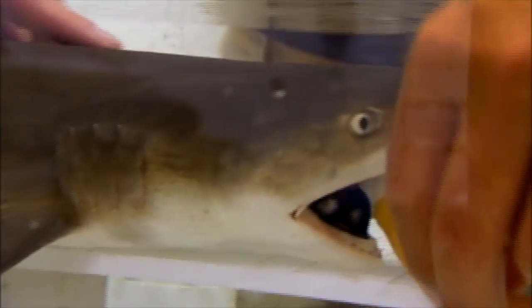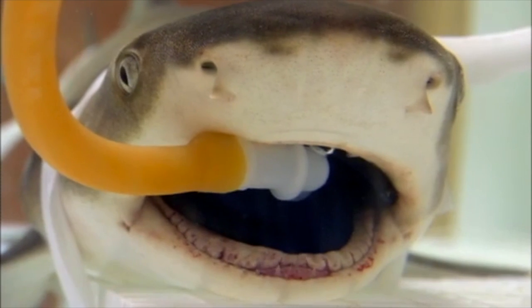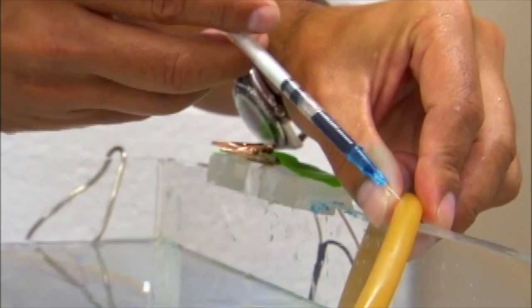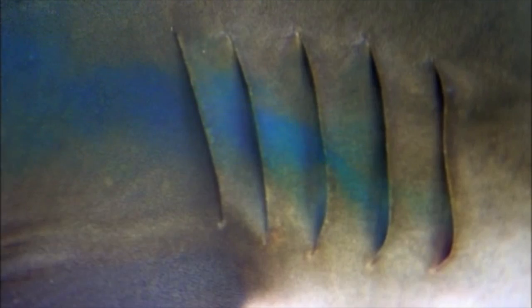First they place the lemon shark in an anesthetic bath, putting it to sleep. A tiny hose keeps water flowing over the gills. Injecting a blue dye confirms the shark is breathing.